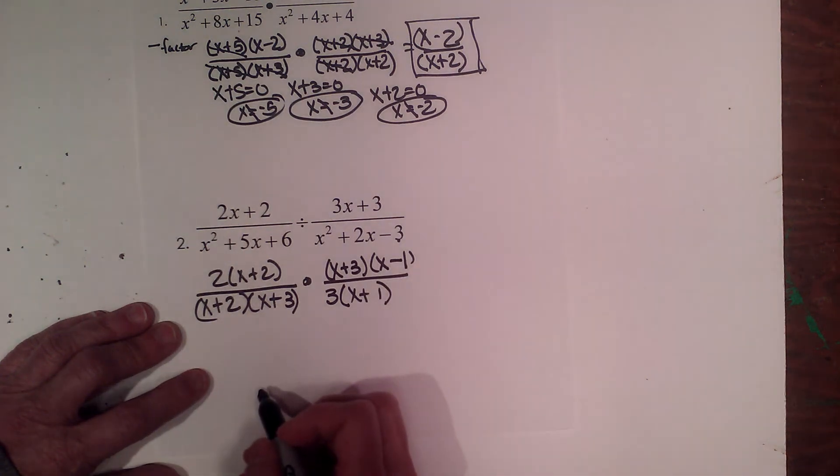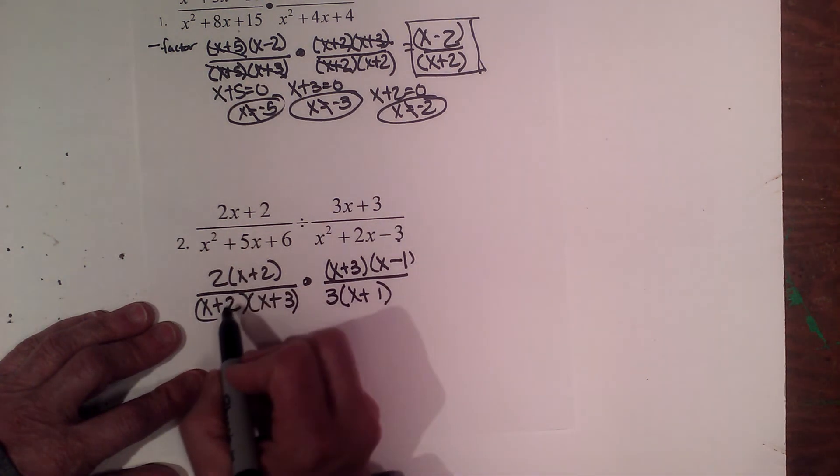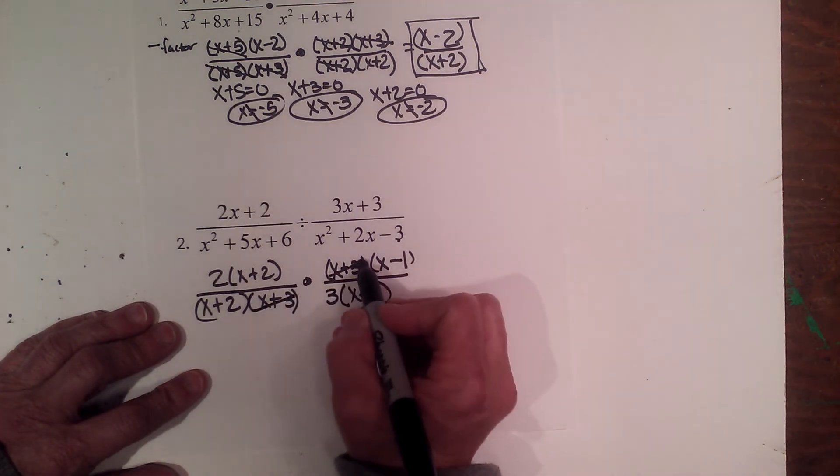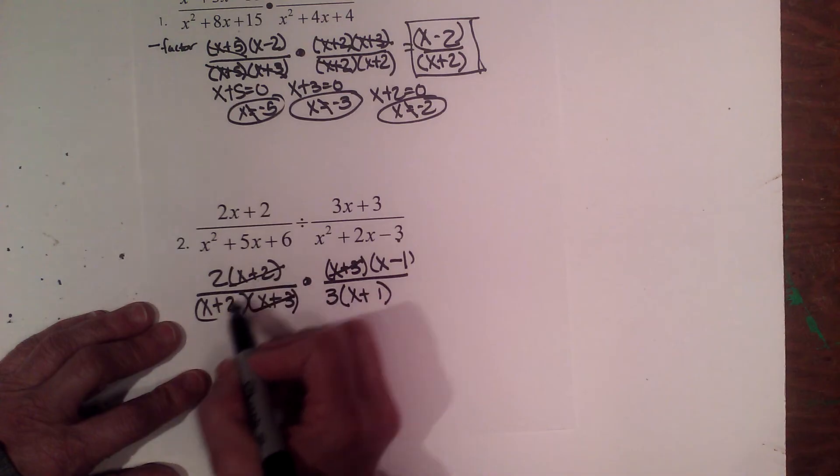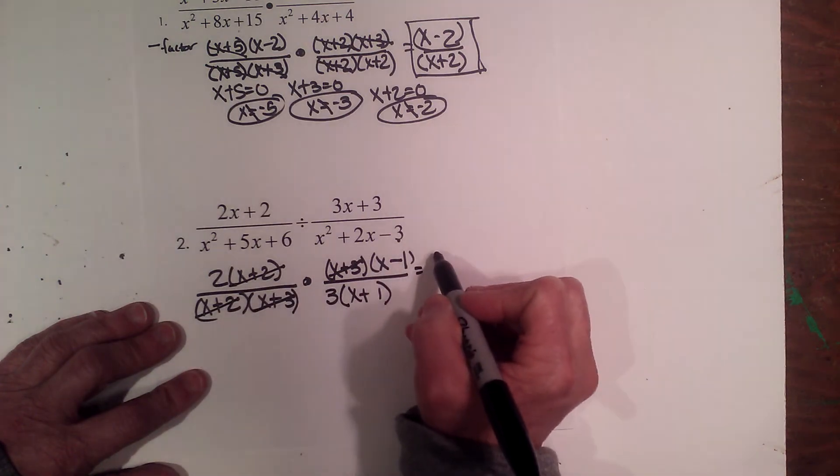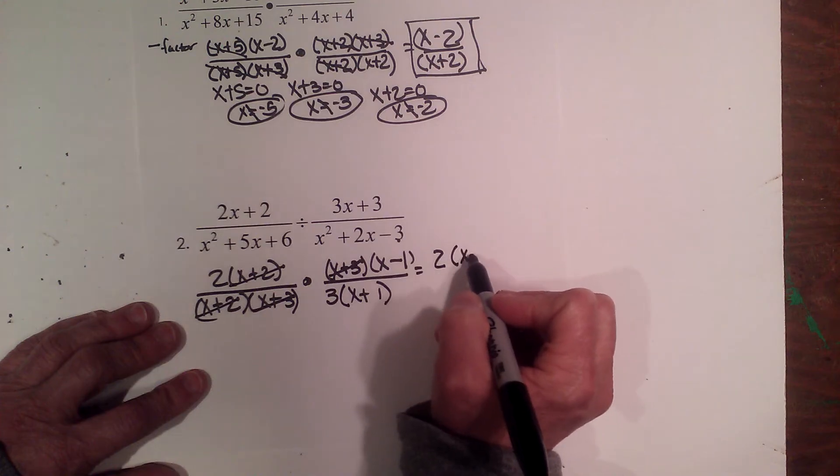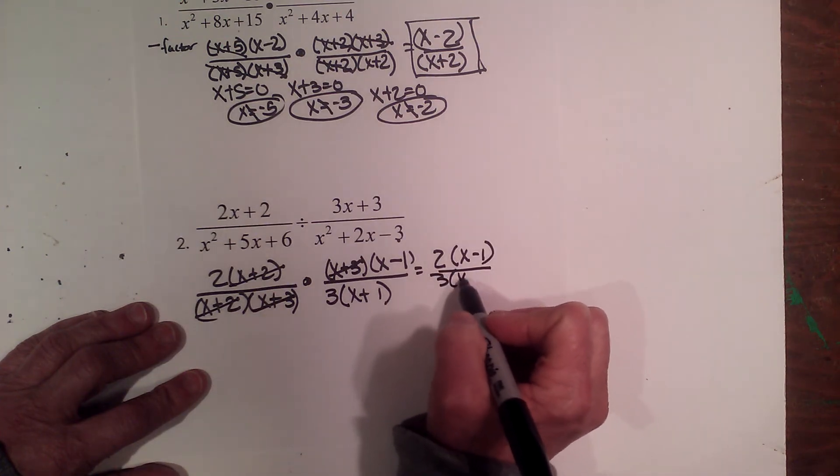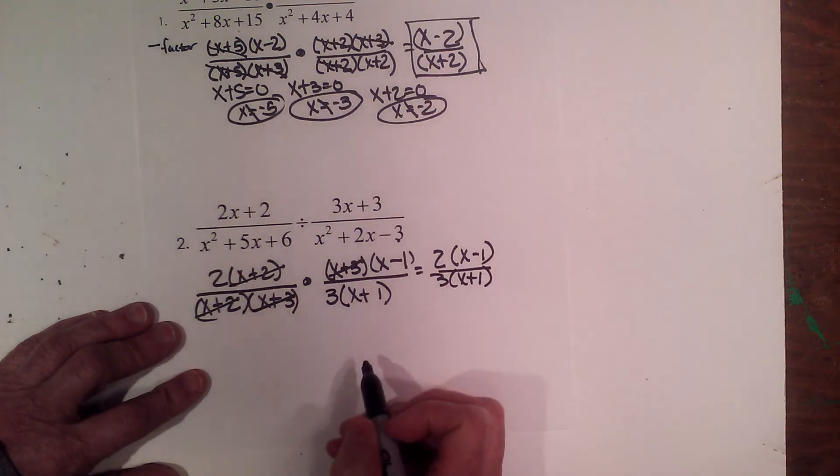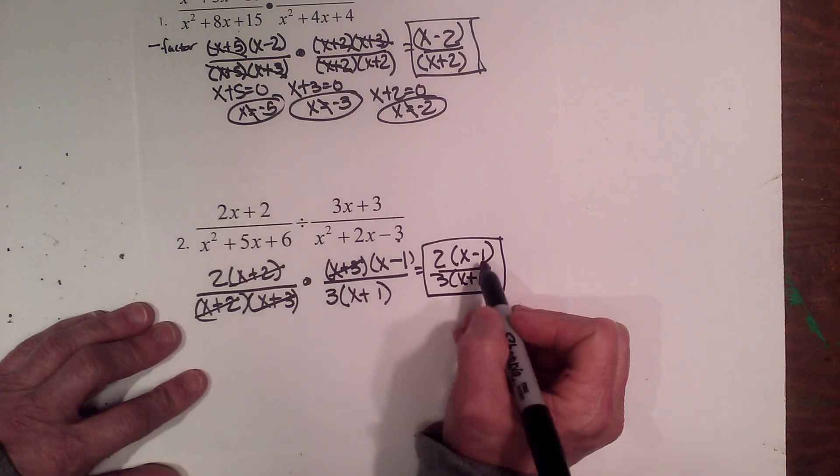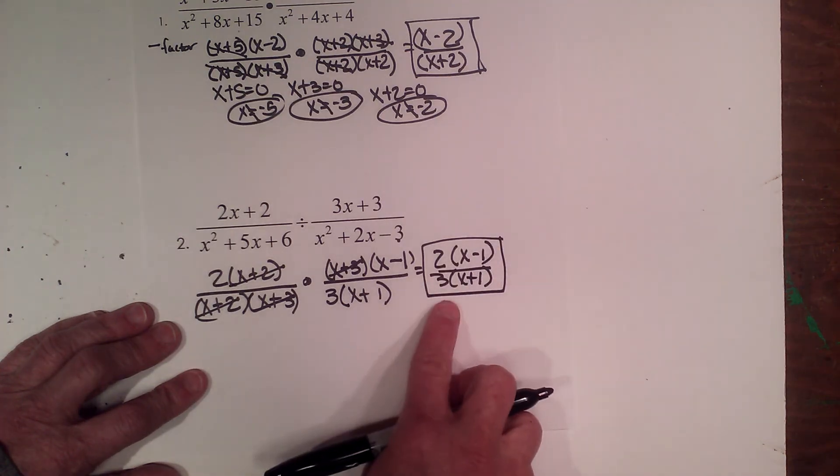Now I get to cancel my factors. So at this point I can cancel out an x plus 3 with an x plus 3, an x plus 2 with an x plus 2, and I'm left with 2x minus 1 in the numerator, and 3 times x plus 1 in the denominator. And those are different factors, therefore I can't cancel those. And there's my answer.